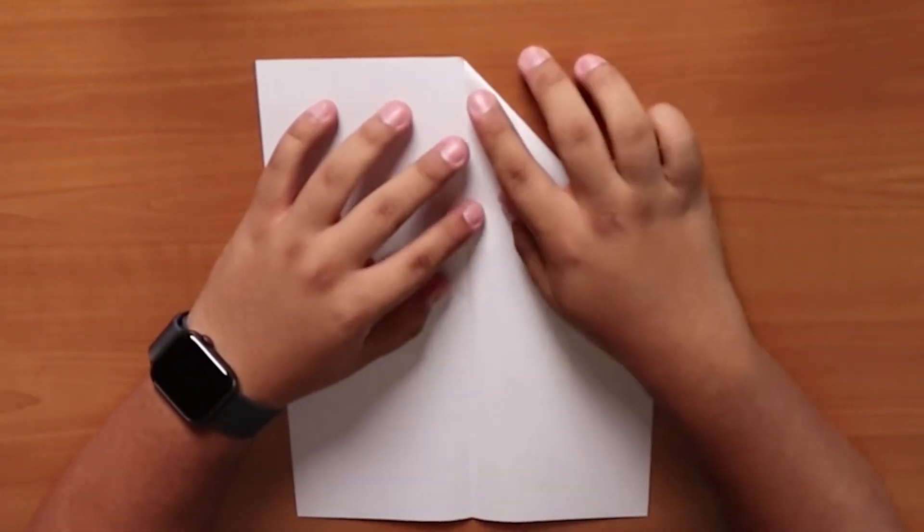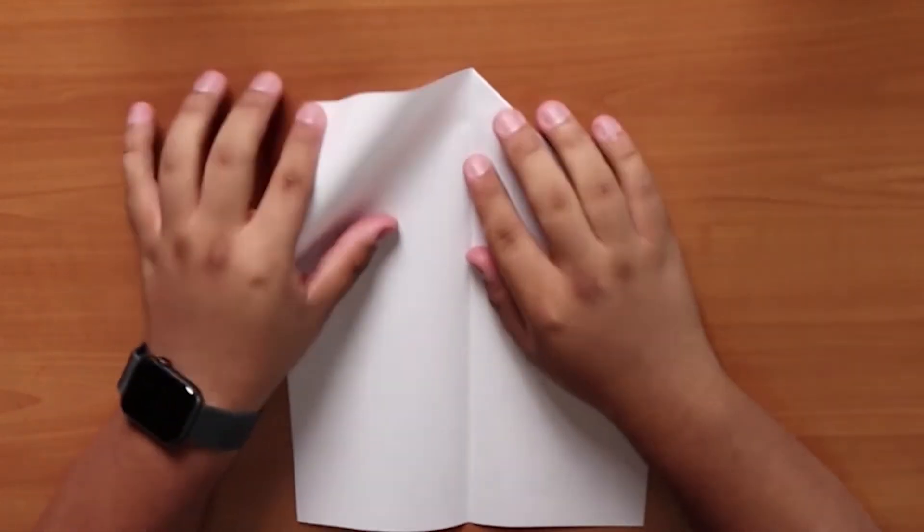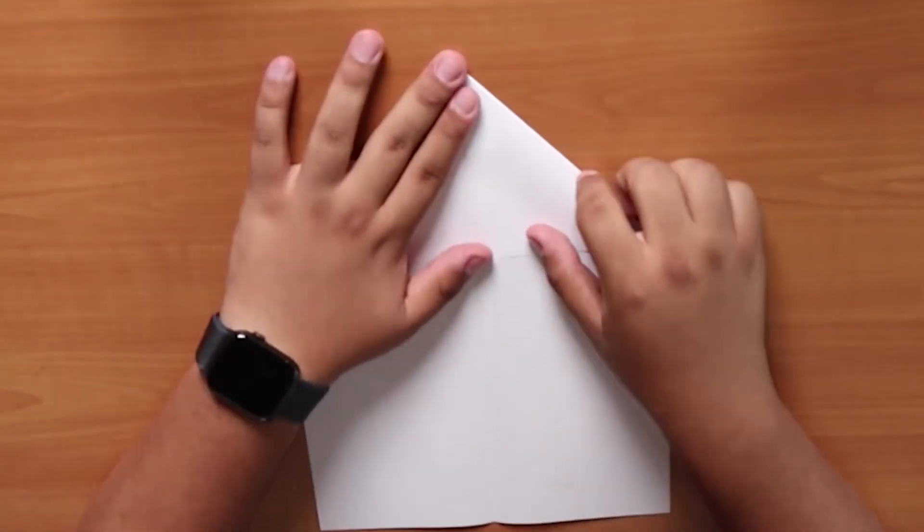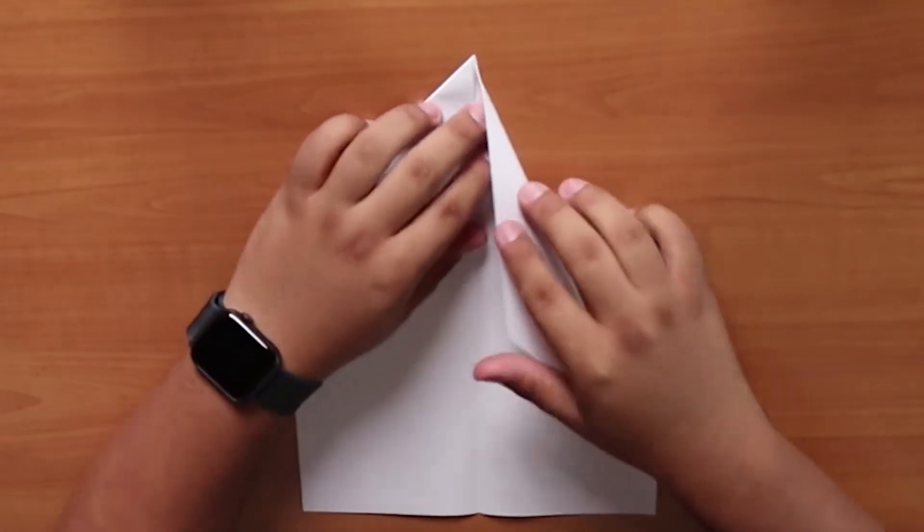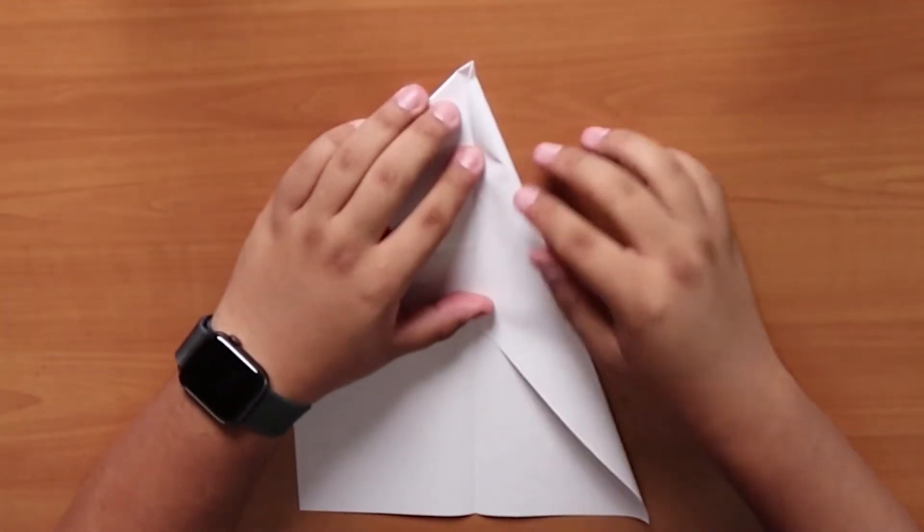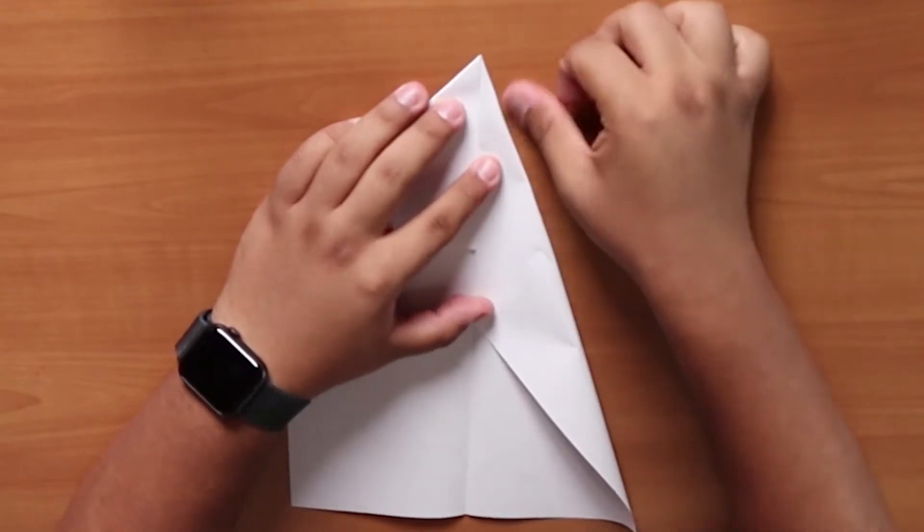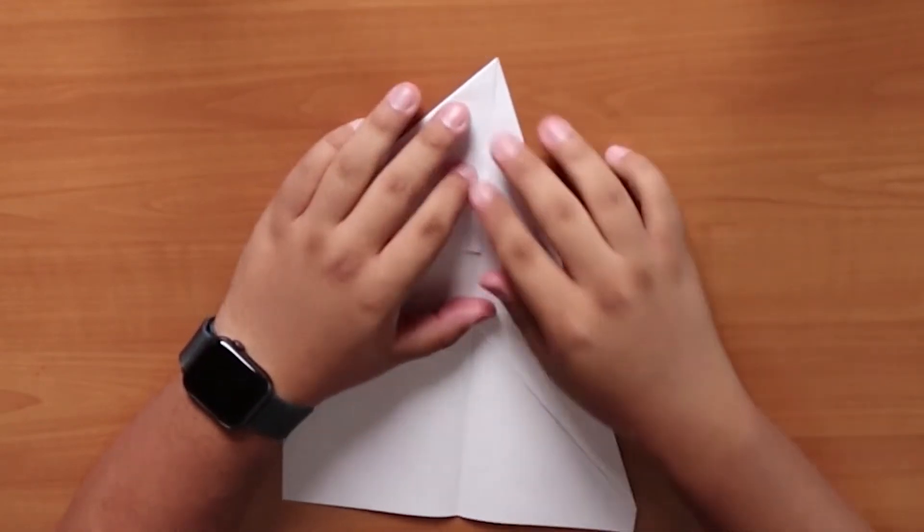Fold the top right and left corners towards the middle crease. If done correctly, both top corners should be meeting in the middle of the paper. Fold the right and left sides overlapping the previous folds towards the middle crease. If done correctly, both sides should meet in the middle once more. Only this time, it should look narrower.